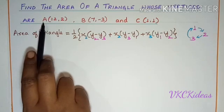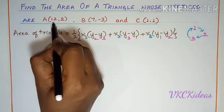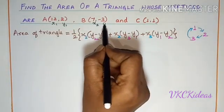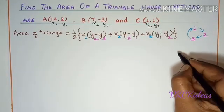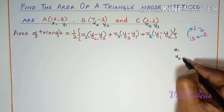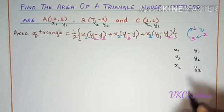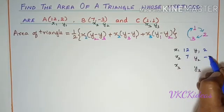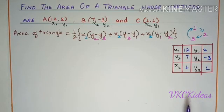We have the coordinates of A to be 12 and 2, which I will write as x1, y1. Similarly, here it is x2, y2, and this one is x3, y3, which we will write in terms of column: x1, x2, x3, y1, y2, y3. We will fill in that: 12, 2, 7, -3, 1, and 1. If you write the data like this, it will avoid all your confusions.